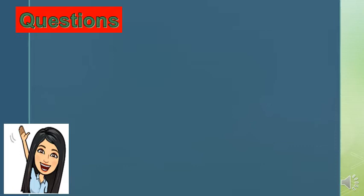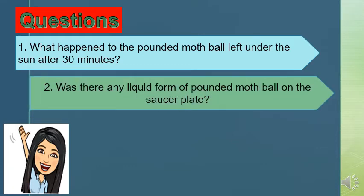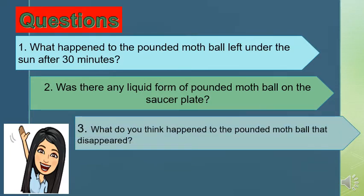Now, I want you to write your reflection based on these questions. Number 1: What happened to the pounded moth ball left under the sun after 30 minutes? Number 2: Was there any liquid form of the pounded moth ball on the saucer plate? Number 3: What do you think happened to the pounded moth ball that disappeared?